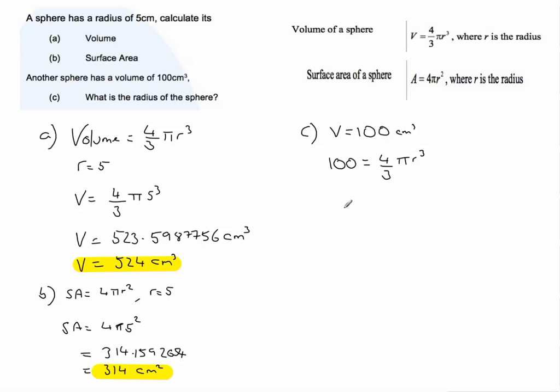We know that 100 equals four thirds times pi r cubed. Lots of ways to approach this one. I'm going to treat this like solving an equation. I'm going to multiply both sides of the equation by three. So I end up with 300 equals four pi r cubed. And I'm going to divide both sides of the equation by four,